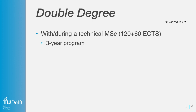You may also choose to do this program as part of a double degree program, in combination with another full technical 120-credit master. You can then combine this master and your technical master in a combined three-year program.